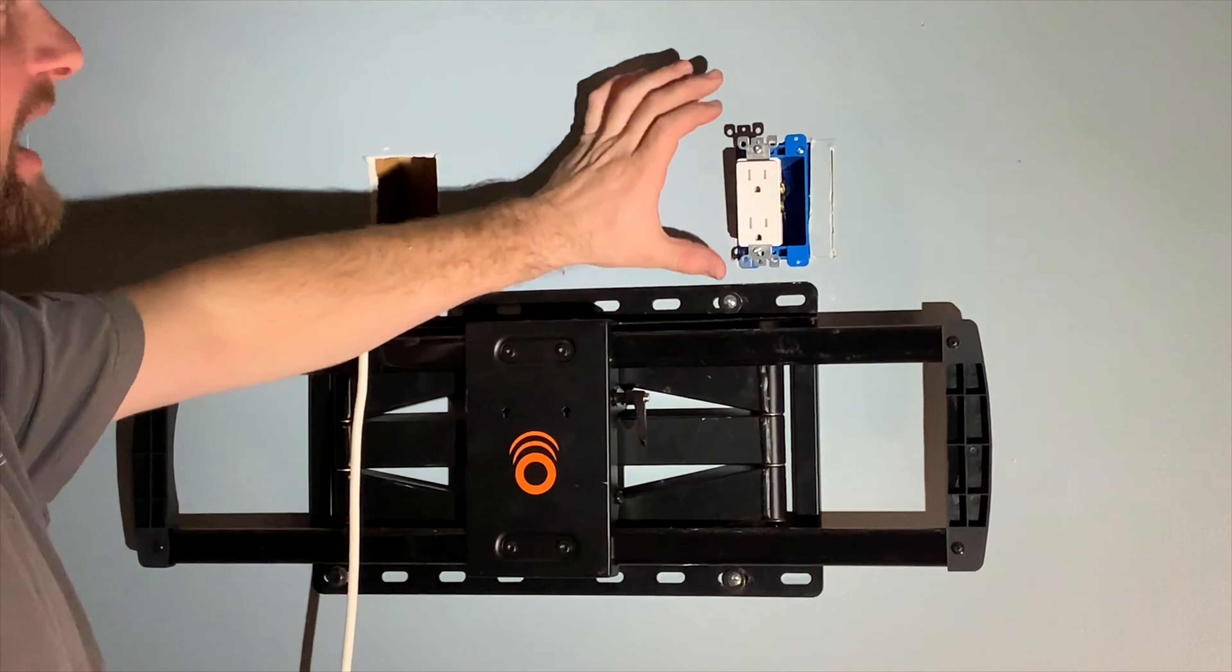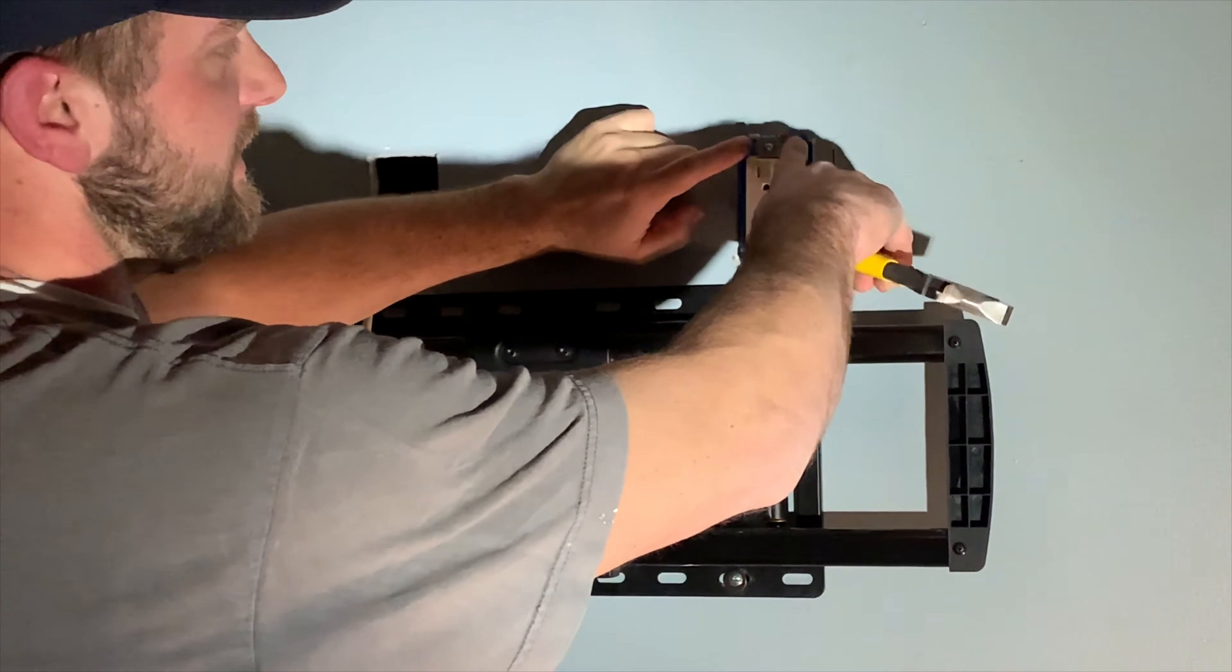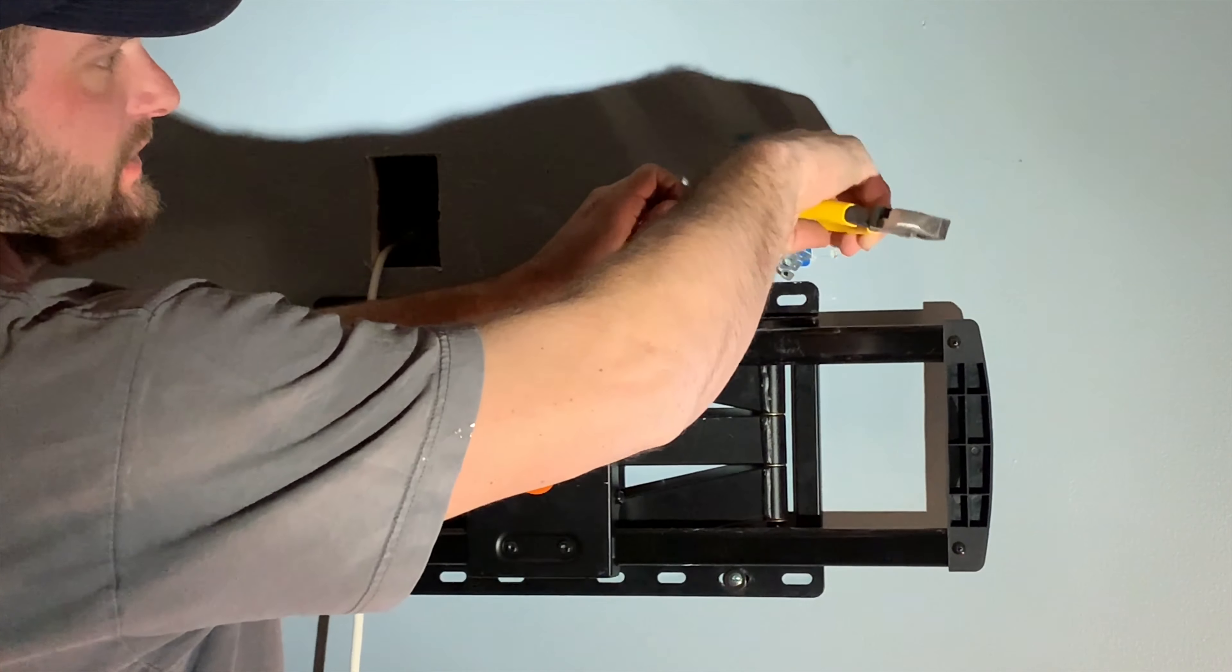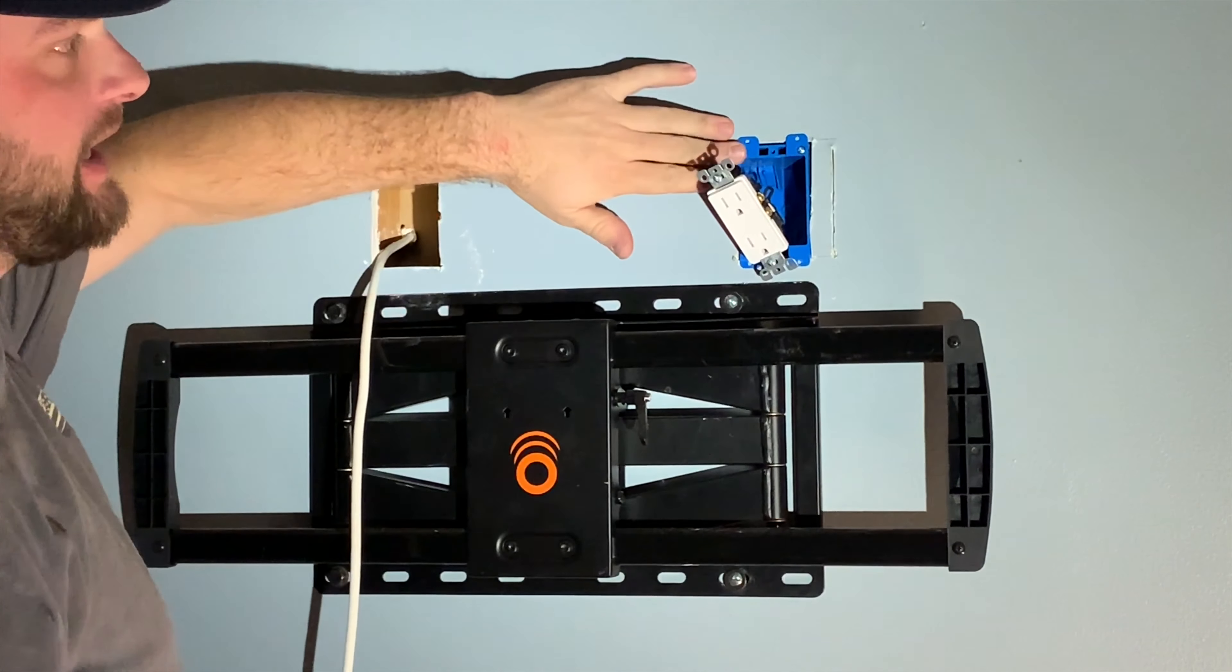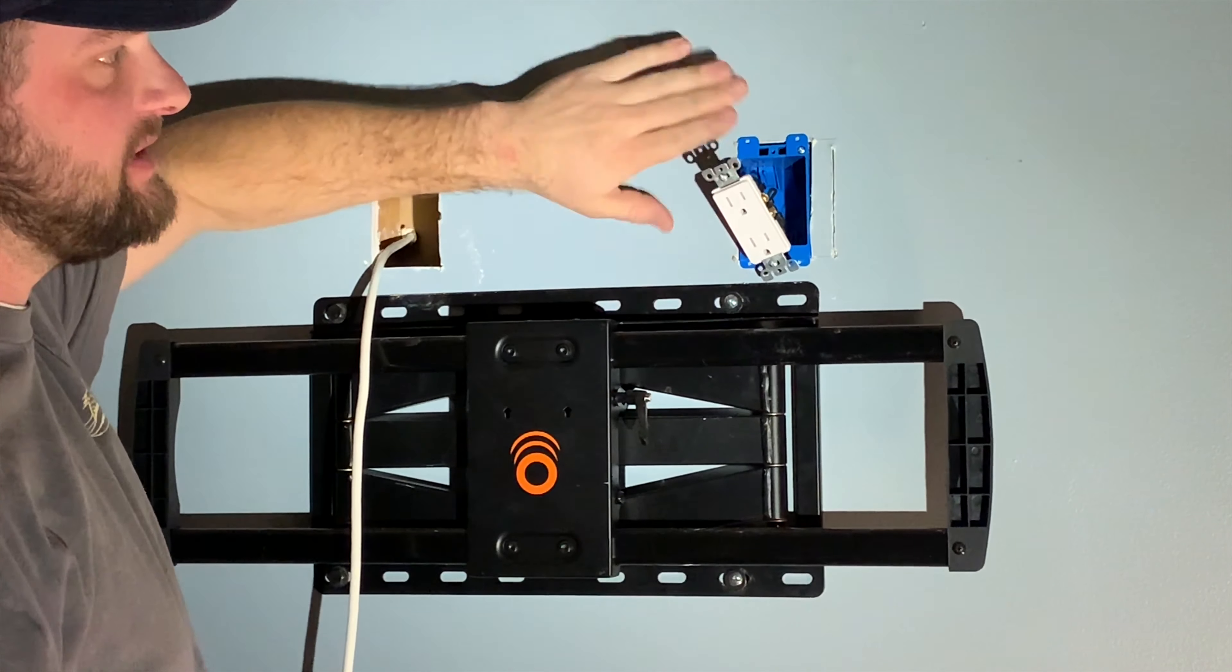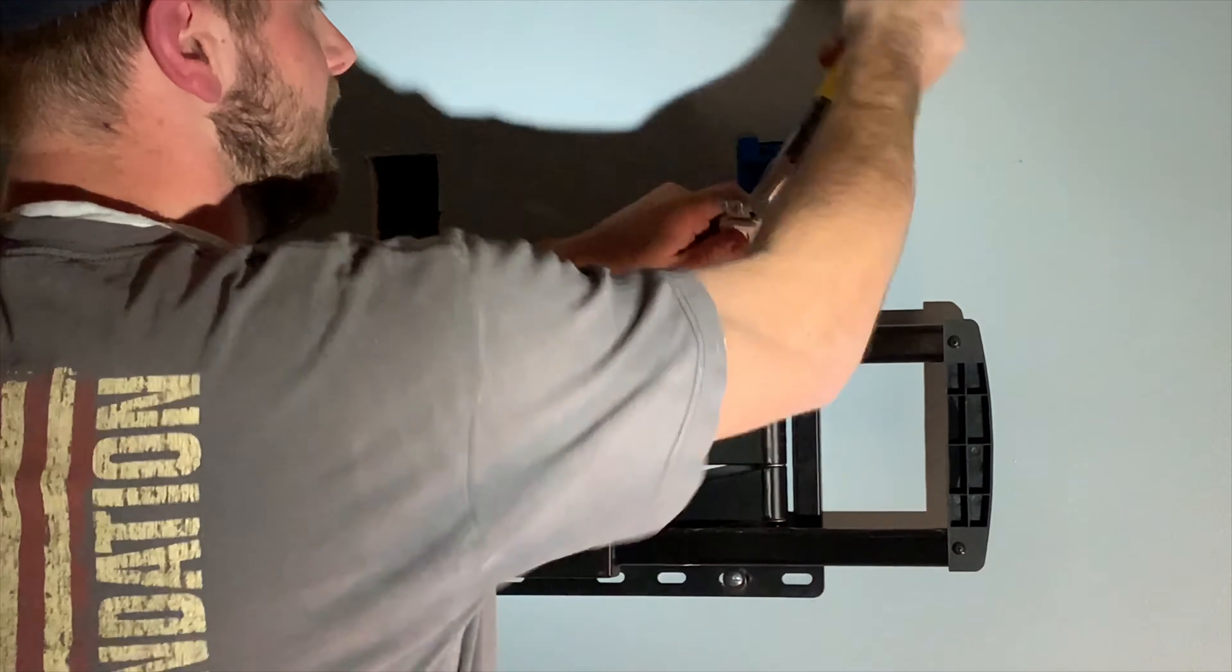It's not a necessity, but it's something that I like to do. I call these ears. So whenever you're using an old workbox, you can see that these are here. When you're doing a new workbox, this is flat. So to have this outlet sit flush, what I do is I just take my pliers and break off the ears.